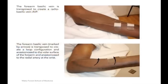Here you can see a transposed forearm basilic vein fistula. The basilic vein runs along the medial and posterior aspect of the forearm, is mobilized to the anterior or volar surface of the forearm, and anastomosed to the radial artery at the wrist. The picture on the top shows a well-developed forearm transposed basilic vein fistula, and the picture on the bottom shows the scar on the posterior medial aspect of the forearm.